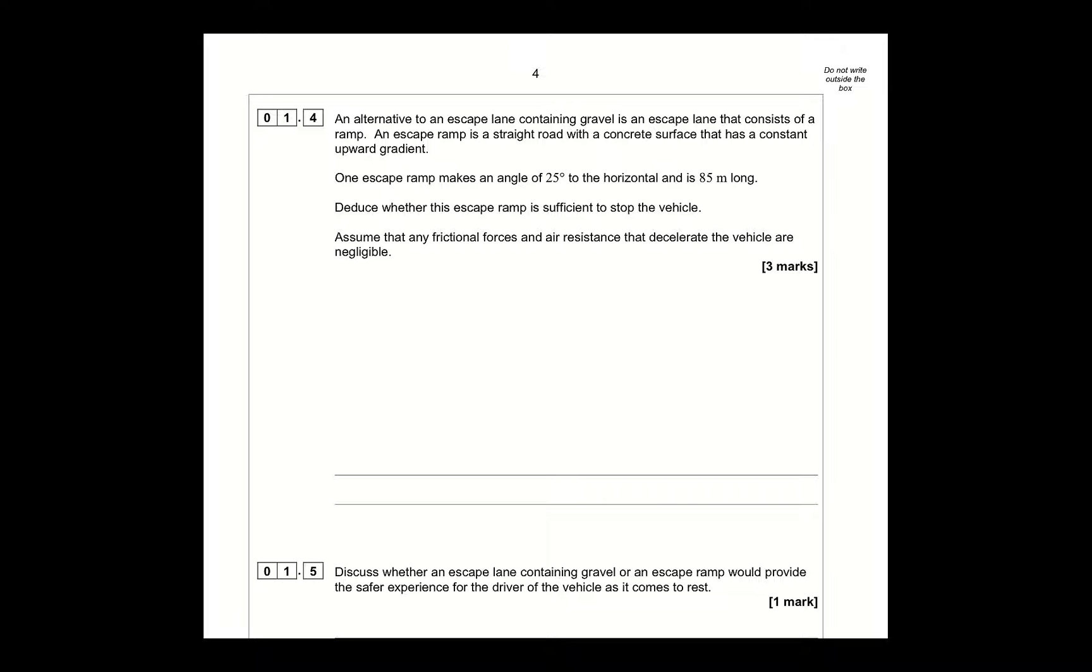Now here, an alternative to an escape lane is a ramp. Okay, so our escape ramp, so it has an angle of 25 to the horizontal and is 85 meters long. Okay, so this is... I really like this question because it's so much more simple than you actually realize. So, number one, always, always, always draw a diagram. Okay, so our ramp, our escape ramp, okay, and it has a 25 degree angle to the horizontal, which, by the way, would be a really steep gradient for this road. 25 degrees would feel very, very steep. Okay? And we know that it's 85 meters long.